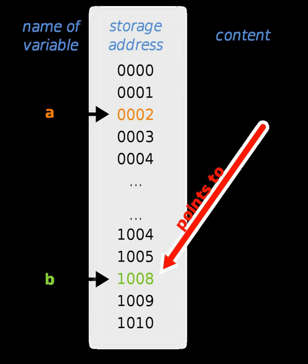Dereferencing a null pointer in C produces undefined behavior, which could be catastrophic. However, most implementations simply halt execution of the program in question, usually with a segmentation fault. However, initializing pointers unnecessarily could hinder program analysis, thereby hiding bugs. In any case, once a pointer has been declared, the next logical step is for it to point at something. This assigns the value of the address of a to PTR.